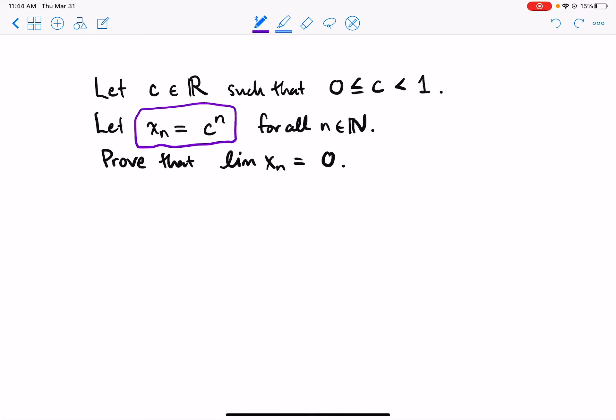Now we're gonna build a sequence, the x sub n's, they'll be all real numbers, just a real number raised to some power. Prove that the limit is 0. In other words, the symbols x_n go to 0, or we could say the sequence x sub n converges to its limit 0.